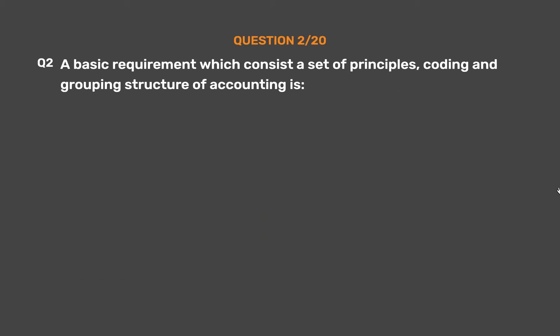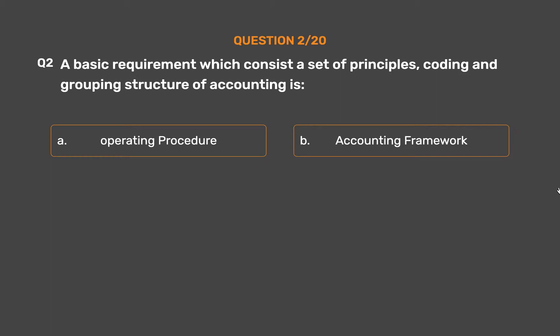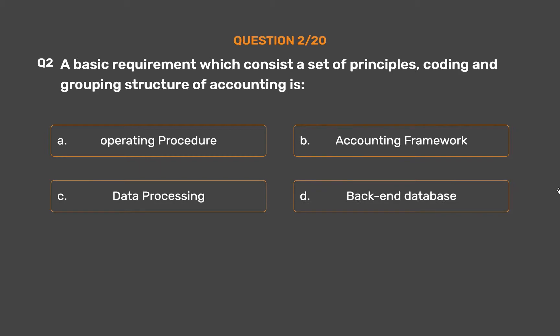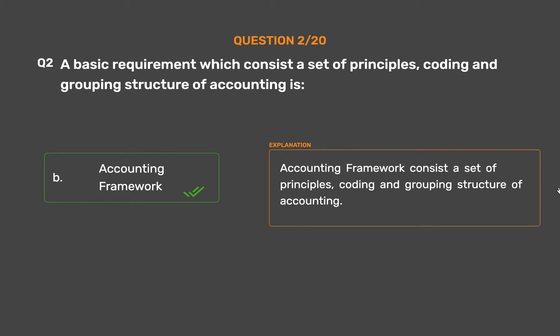Question number 2. A basic requirement which consists a set of principles, coding and grouping structure of accounting is: Option A: Operating procedure. Option B: Accounting framework. Option C: Data processing. Option D: Backend database. The correct answer is Option B: Accounting framework. Accounting framework consists a set of principles, coding and grouping structure of accounting.